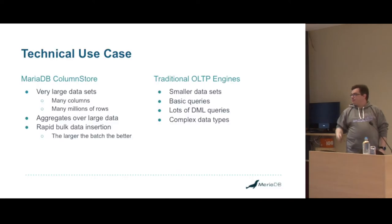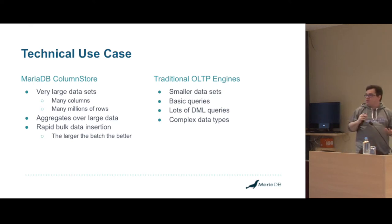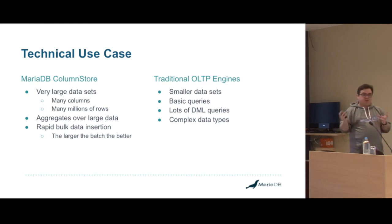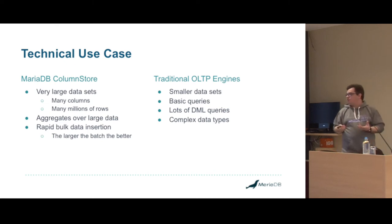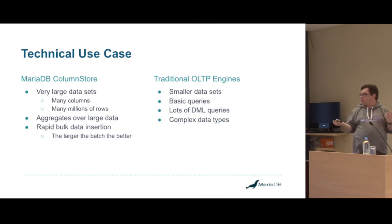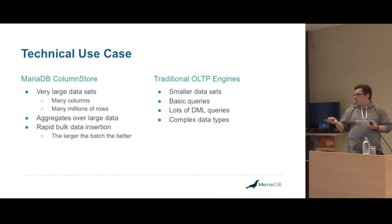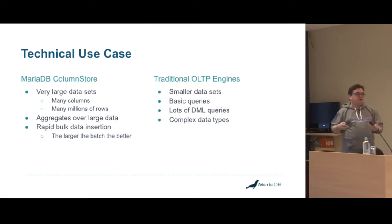Why use it? MariaDB ColumnStore is designed to deal with very, very large datasets, especially when you want to do large amounts of aggregation or filtering. It's optimized for sparse queries in particular — we use hash joins. We have very rapid bulk data insertion rates. For OLTP, smaller datasets — typically less than a terabyte — with basic queries, very large joins and aggregates tend to get quite slow, and you'd need large indexes. If you have lots of DML queries, OLTP is better. ColumnStorage is better for data warehousing and archives.